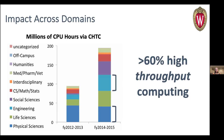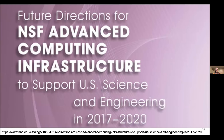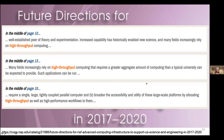Even in the physical sciences and engineering — the domains that have driven traditional high-performance computing — we saw that a majority of their demand when given access to a scalable high-throughput computing system was also executed in high throughput rather than needing a traditional HPC system. This trend is reflected in the National Academy of Sciences report, which concluded that many fields increasingly rely on high-throughput computing, but that the scale required can exceed what a typical university can provide on its own. OSG plays a significant role in bringing large-scale computing to the fingertips of researchers.